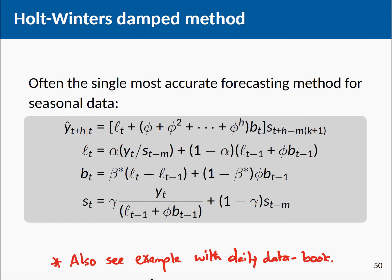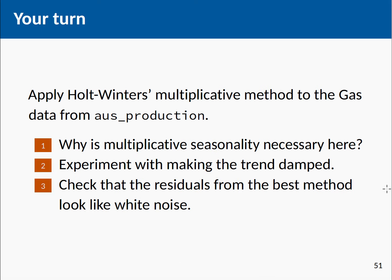There is a nice example using daily data in the textbook which is worth trying. Holt-Winters is also extended to include dampening, and it is usually the single most accurate forecasting method for seasonal data that includes trend. The damping parameter phi is introduced in front of the trend component — each time BT minus 1 appears, it is multiplied by phi. You can practice with different datasets at home.